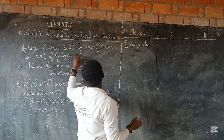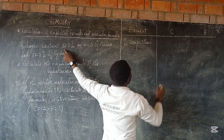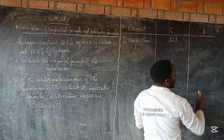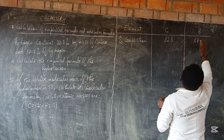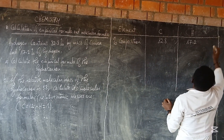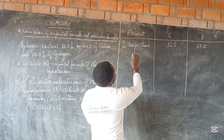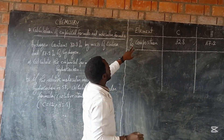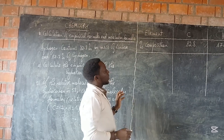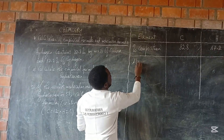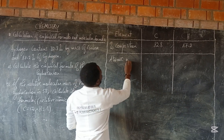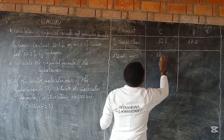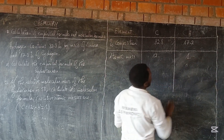This is the data that we have. Remember, carbon has 82.8% and hydrogen has 17.2%. After writing the percentage composition, we have to show the atomic mass. The atomic mass of carbon is 12, and the atomic mass of hydrogen is 1. This is information given in our question.